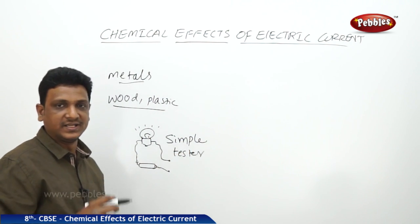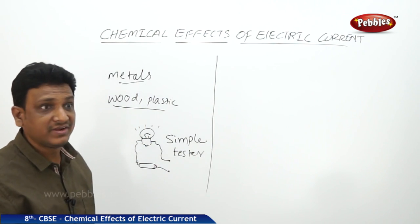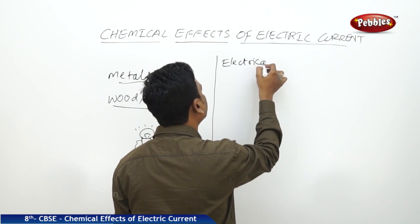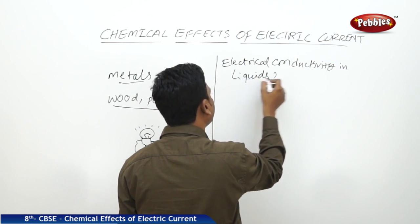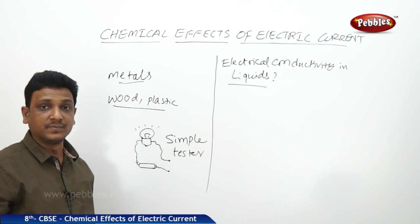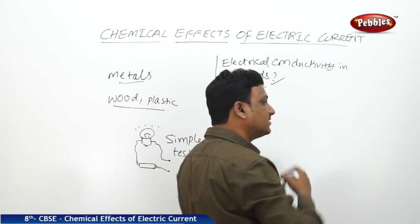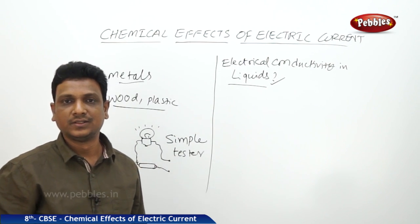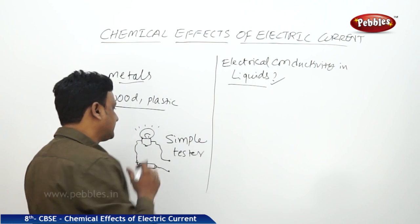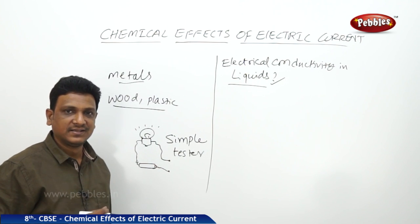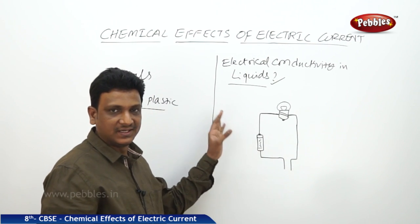This simple tester tests the conduction capacity of the material. Now in this particular chapter we are going to discuss about the electrical conductivity of liquids. Solids we tested in the previous classes and we have come to know what materials are good conductors and what are poor conductors of electricity. Now let us discuss whether liquids can also be tested for electrical conductivity — yes, we can test, and for that you need a tester like this.